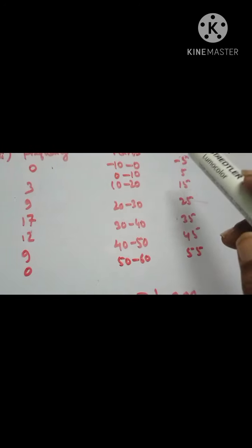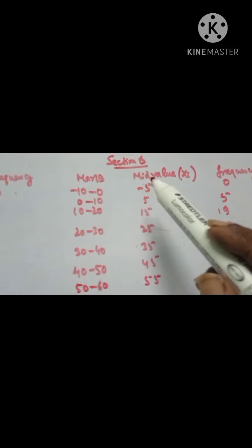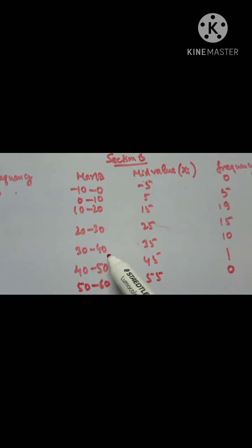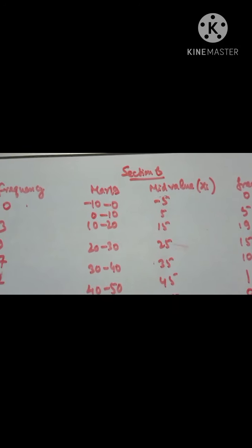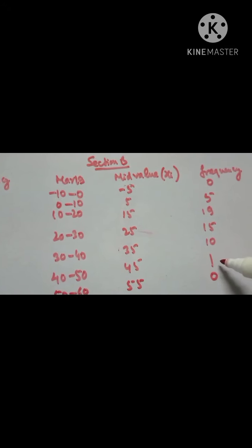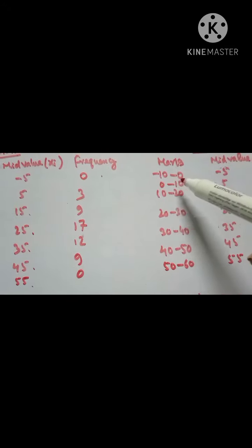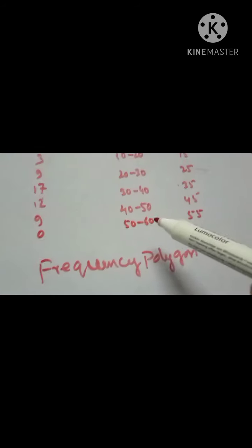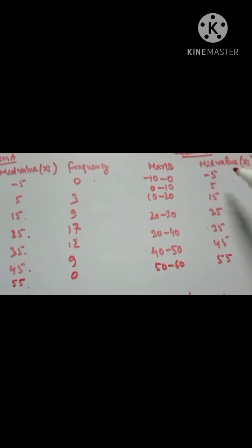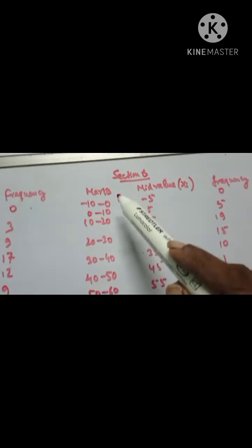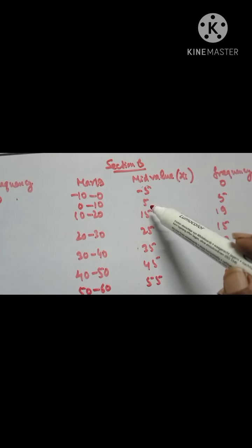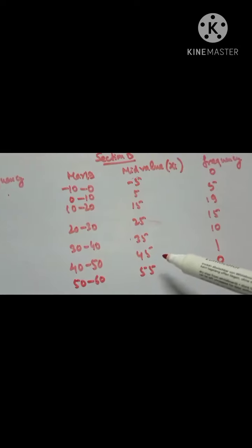Now for Section B, the class intervals are again 0 to 10, 10 to 20, 20 to 30, 30 to 40, 40 to 50, and 50 to 60. The frequencies given are 5, 19, 15, 10, 1, and 0. Similarly, we take the mid value as upper limit plus lower limit divided by 2, giving minus 5, 5, 15, 25, 35, 45, and 55.